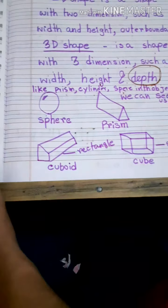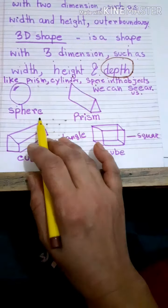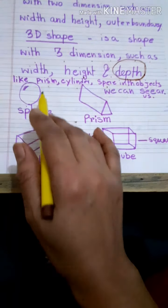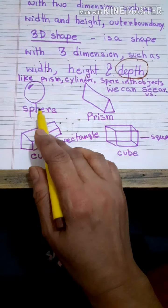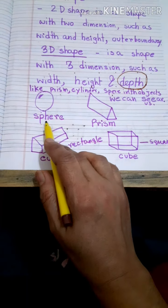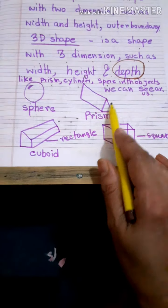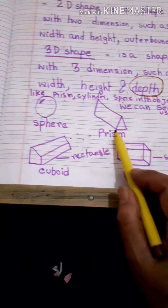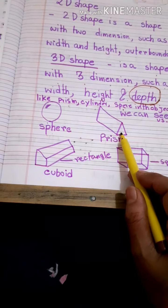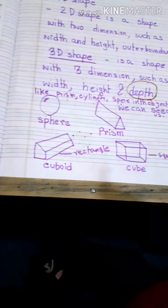Now I can tell you some of the 3D shapes. See, this is called a sphere. Can't you see? This sphere looks just like a circle. Now this is a prism — it also looks like a triangle, but it has width, height as well as depth. So this is called a 3D shape.